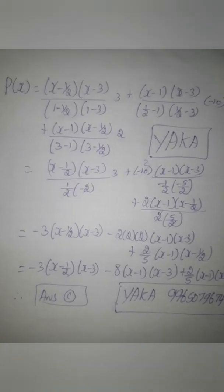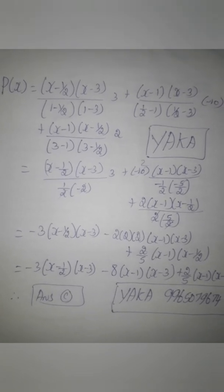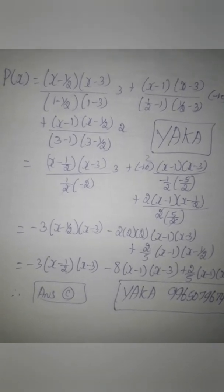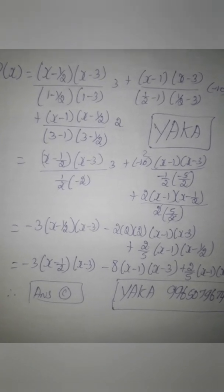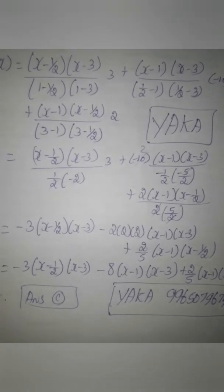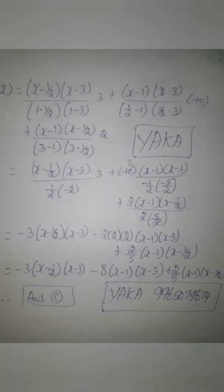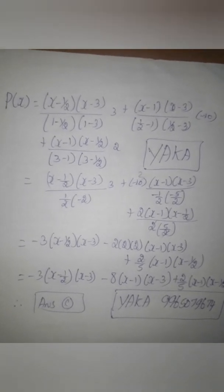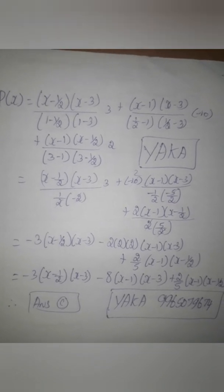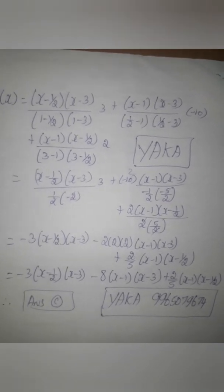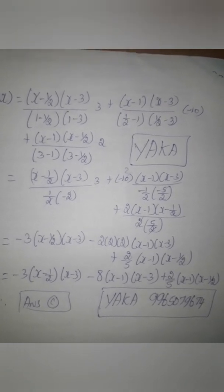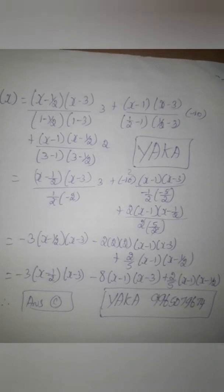If we substitute the value, what is it? It is minus 3 first, minus 8, that is 2 by 5. The answer is minus 3, x minus 1 by 2, x minus 3, minus 8, x minus 1, x minus 3, plus 2 by 5, x minus 1, x minus 1 by 2.